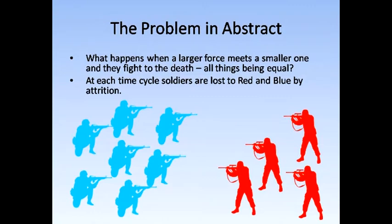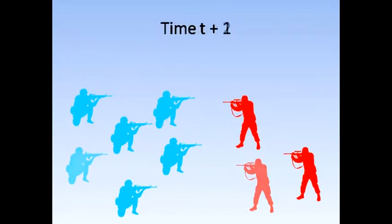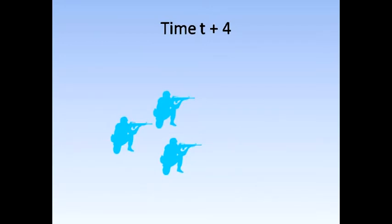Here we have seven blue soldiers versus four red blazing away at each other. How does this turn out? After each unit time, attrition on both sides has worn away the numbers. Here's how we might imagine this fight to go. So at the end, three blue soldiers are left standing. The result is a simple subtraction of red from blue. Is this how it works? Let's use recursion to figure it out.